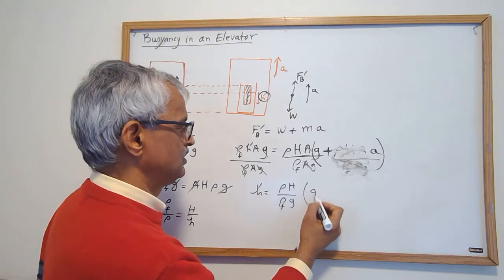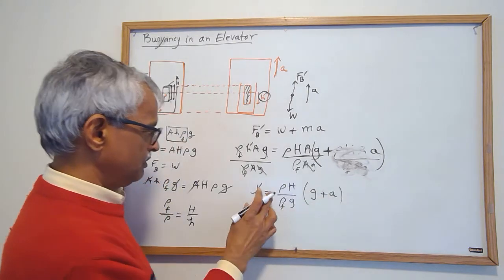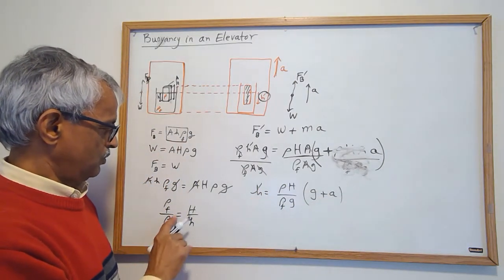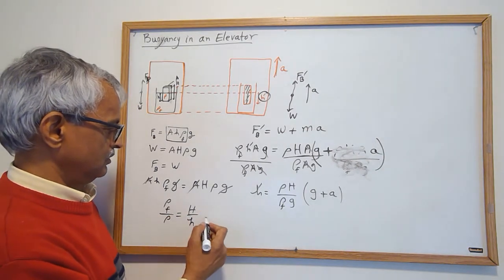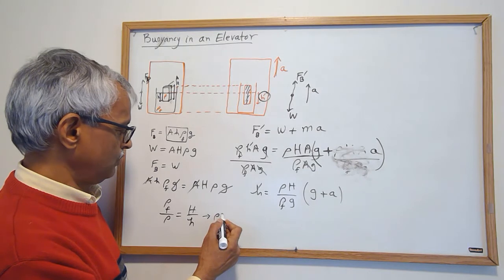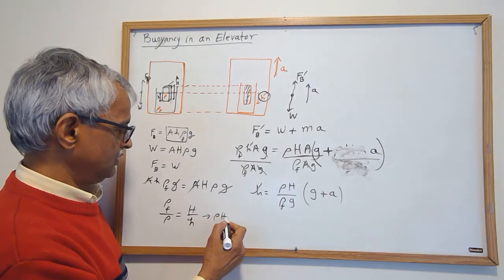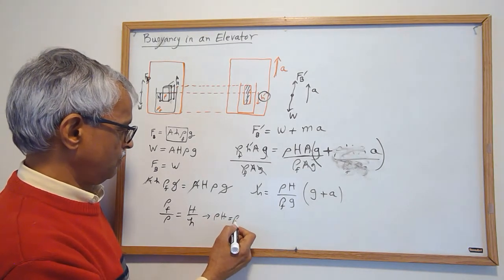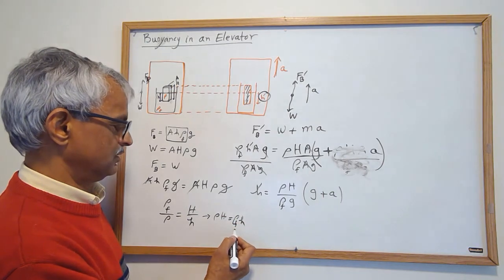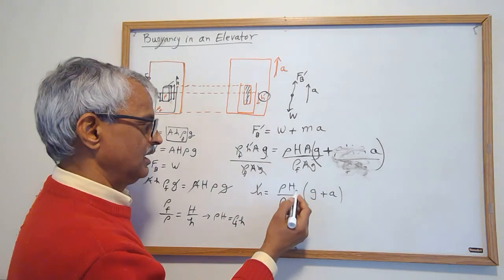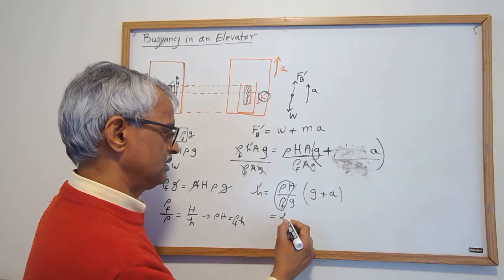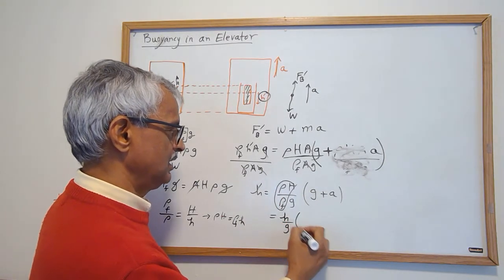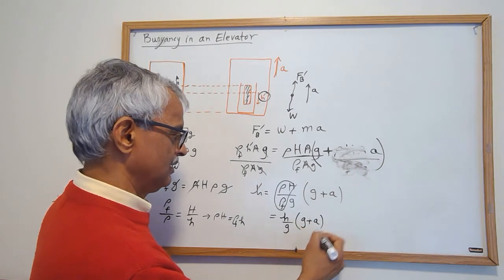But we know ρ times H equals ρf times h. So this original formula gave me ρ times H equals ρf times little h. So I can actually, this whole thing is just h. So this is the original height h times (g+a)/g.